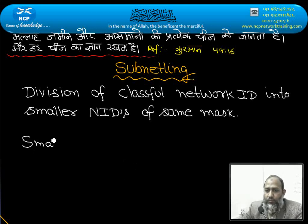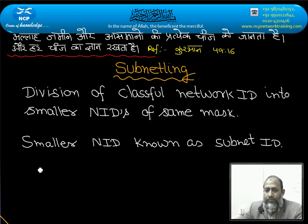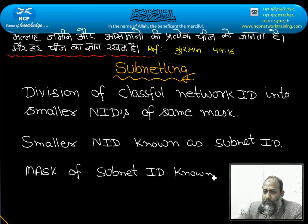A smaller network ID is known as a subnet ID. The mask of a subnet ID is known as a subnet mask.